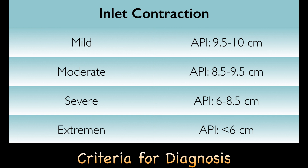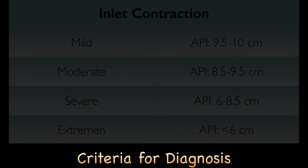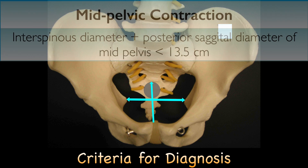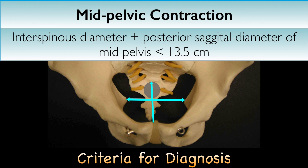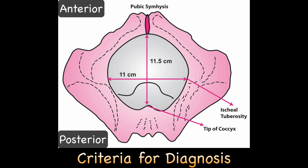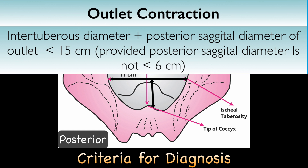Fortunately, we never encounter such cases in modern obstetrics. The formula used for diagnosing mid-pelvic contraction is: interspinous diameter plus the posterior sagittal diameter of the mid-pelvis less than 13.5 cm indicates mid-pelvic contraction. The formula for outlet contraction is: intertuberous diameter plus the posterior sagittal diameter of the outlet less than 15 cm, provided the posterior sagittal diameter is not less than 6 cm.